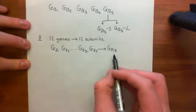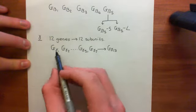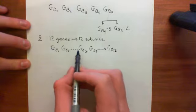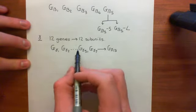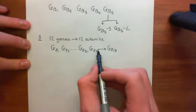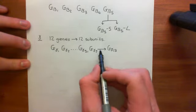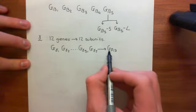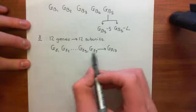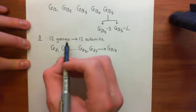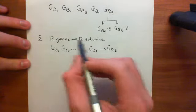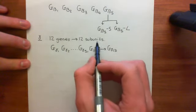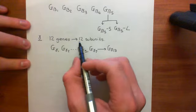That gives us 12 different gamma subunits overall. There is G-gamma-1, G-gamma-2, G-gamma-3, G-gamma-4, G-gamma-5, then G-gamma-7, G-gamma-8, G-gamma-9, G-gamma-10, G-gamma-11, G-gamma-12, and finally G-gamma-13. That gives us 12 different genes for gamma subunits, which all code for a single protein, and therefore we end up with 12 gamma subunits.